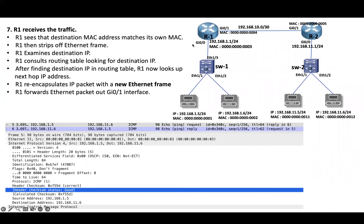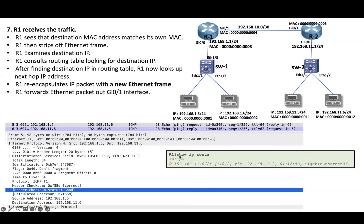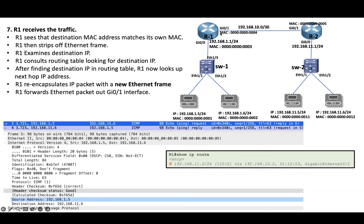R1 will receive the frame and process it, as the destination MAC address is owned by R1. The router will strip off the Layer 2 header and look at the IP header. The router will verify the header checksum, and if the checksum is okay, it will look at the routing table to find a match for the destination. It then encapsulates the IP packet and sends it out of GigabitEthernet 0/1. The source MAC is 004 (owned by R1's Gig 0/1 interface) and destination MAC is owned by R2's interface.